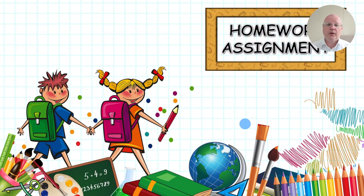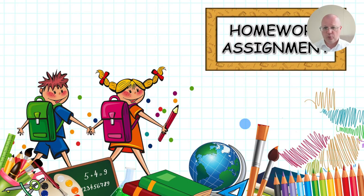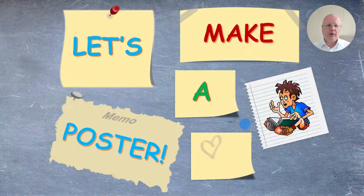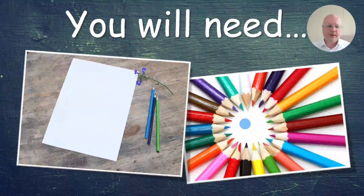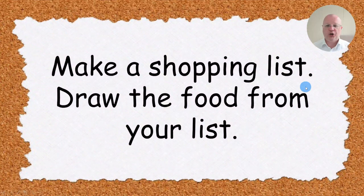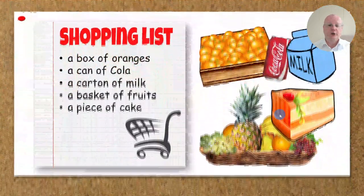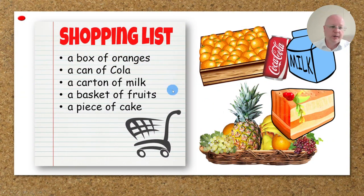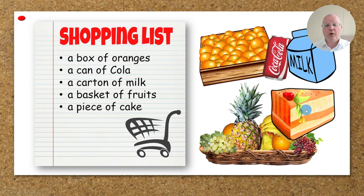This activity is optional. You can assign it as homework or do it in class if you go quickly through the lesson content. I usually assign it as homework. Students need to make a poster — they'll need a piece of paper and a few colored pencils. They make a shopping list and draw the food from their shopping list. Here's an example: in my shopping list I have a box of oranges, a can of cola, a carton of milk, a basket of fruits, and a piece of cake.